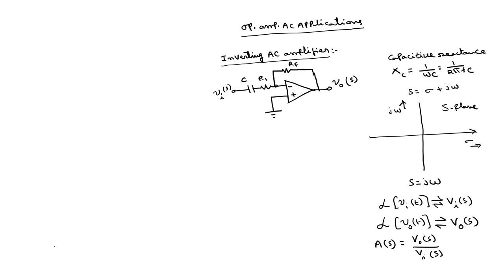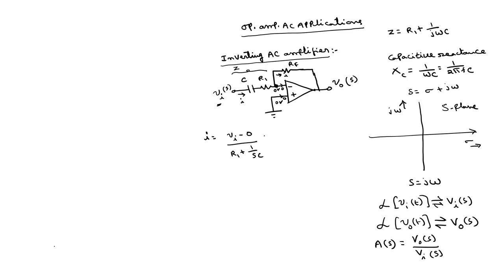Using the two assumptions — the voltage at inverting and non-inverting terminals are equal (both 0 volts), and the currents into both inputs are 0 — if we assume the current is i, the same i flows through RF. At the input circuit, i = Vi(S) / Z, where Z = R1 + 1/(jωC) = R1 + 1/(SC).